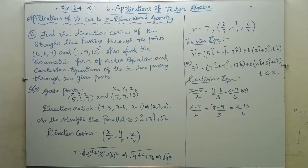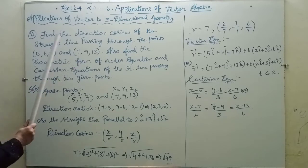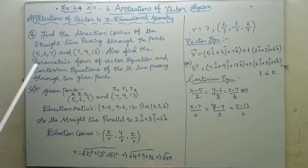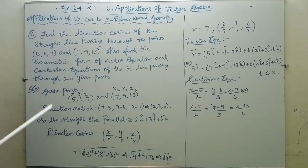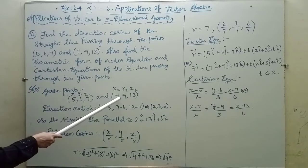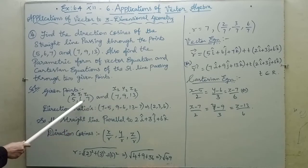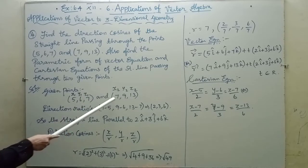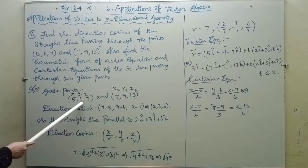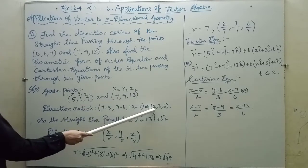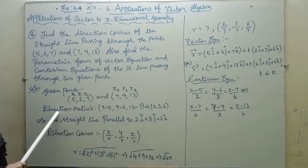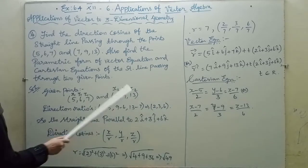Now the direction ratios are found using: x2 minus x1, y2 minus y1, z2 minus z1. So that is 7 minus 5, 9 minus 6, 13 minus 7. Subtracting gives 2, 3, 6. These are the direction ratios.